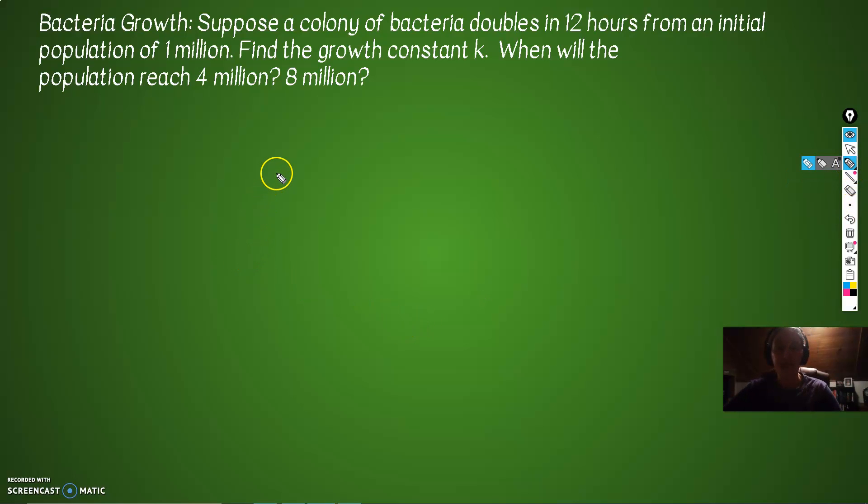Suppose the colony of bacteria doubles in 12 hours. So hang on before I get started. A equals P to the E to the R to the T. Suppose a colony of bacteria doubles in 12 hours from an initial population of 1 million. So we know we have an initial population of 1 million. We know it doubles every 12 hours. And because it doubles, what's the final going to be? If it doubles, it's going to go from 1 million to 2 million. Find the growth constant K. These guys use growth constant K. I'm going to keep steady with R because I like being consistent.